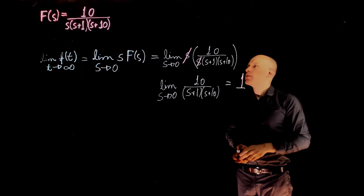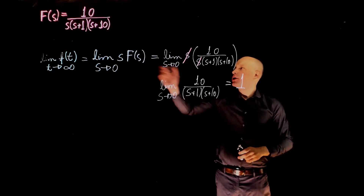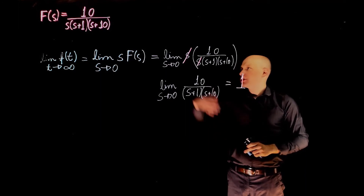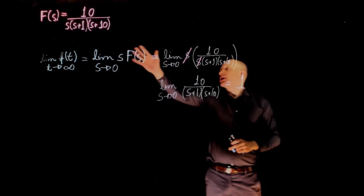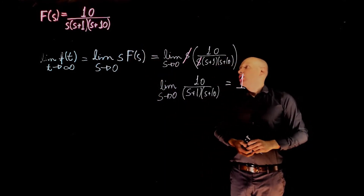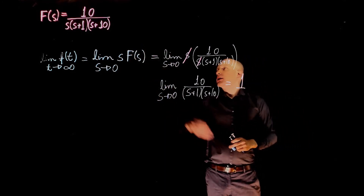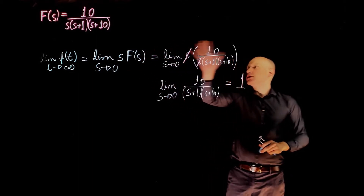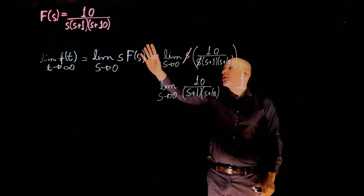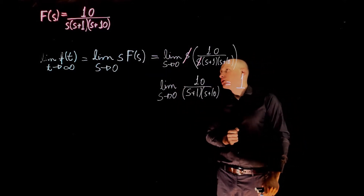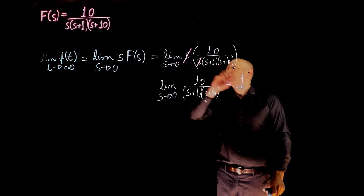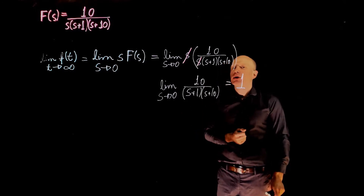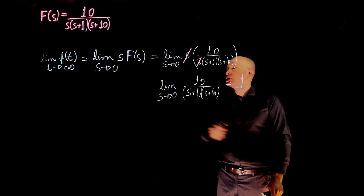Now let's find the temporal response f(t) using the inverse Laplace. Since this function cannot be found directly in a Laplace transform table, we need to split it into smaller fractions — that is, we require a partial fraction decomposition of F(s).